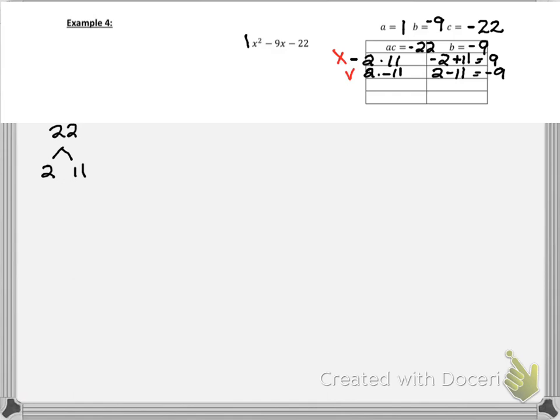So remember, the shortcut method is to set up your factors just like this. And then put in, what do we have? Plus 2 and minus 11.